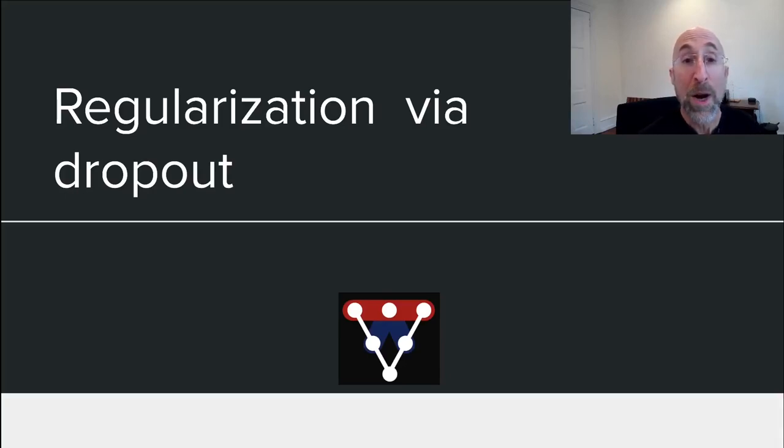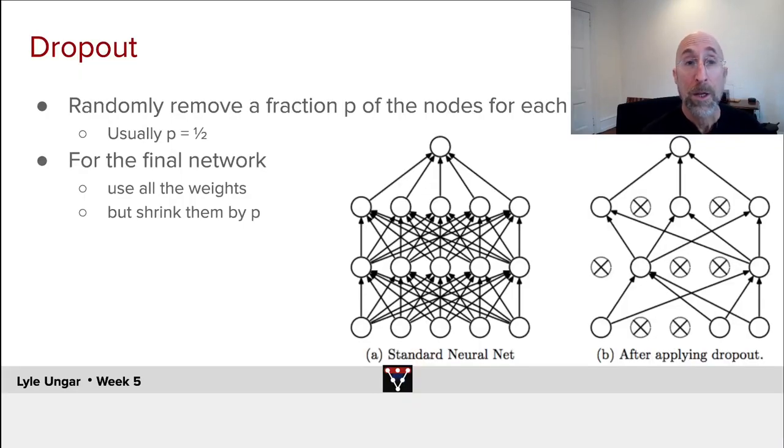Dropout is another widely used regularization technique. In dropout, for each mini-batch, we randomly select a fraction p of the nodes, usually one-half.